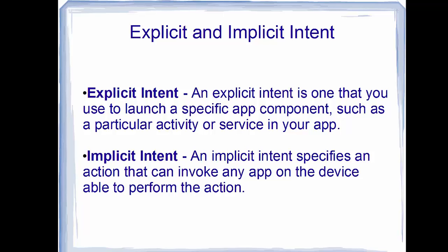An implicit intent specifies an action that can invoke any app on the device able to perform that action. You use implicit intent whenever you want to invoke some app or activity from another app on your device. So with explicit intent you invoke an activity within your app, and with implicit intent you can invoke an activity or component from another app present on your device.